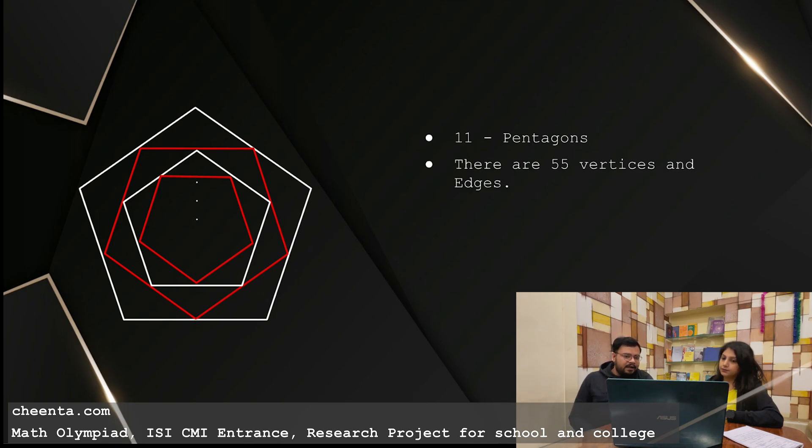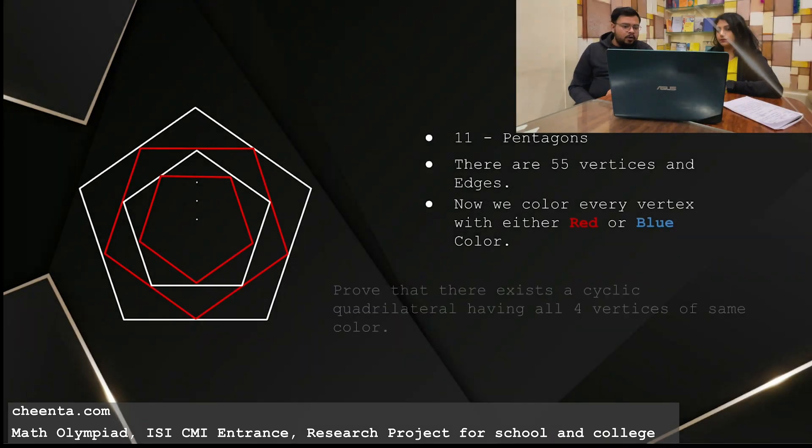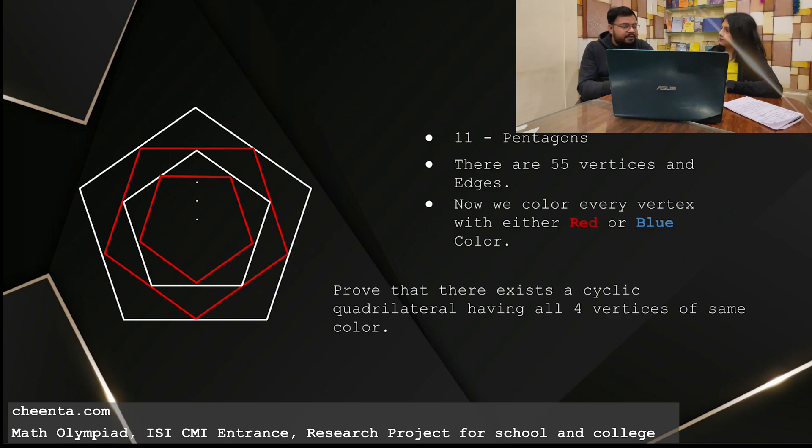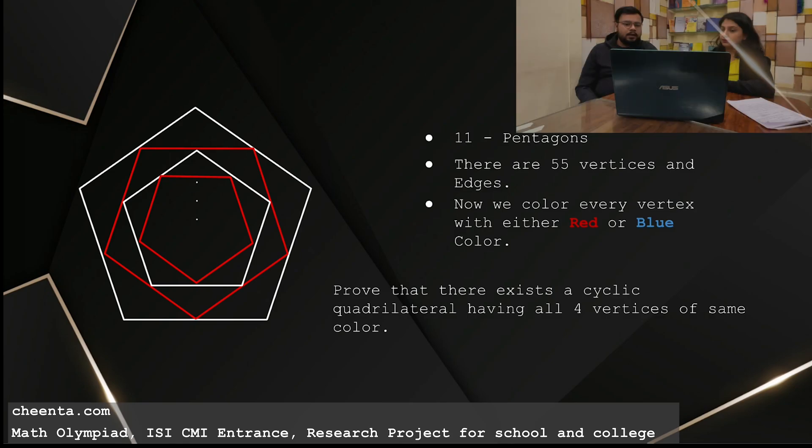How many vertices and edges are there? I think 55 vertices and 55 sides. Absolutely. There will be 55 vertices and 55 edges. So now they have said to color the vertices with red and blue colors. We need to color all the 55 vertices with red and blue colors.